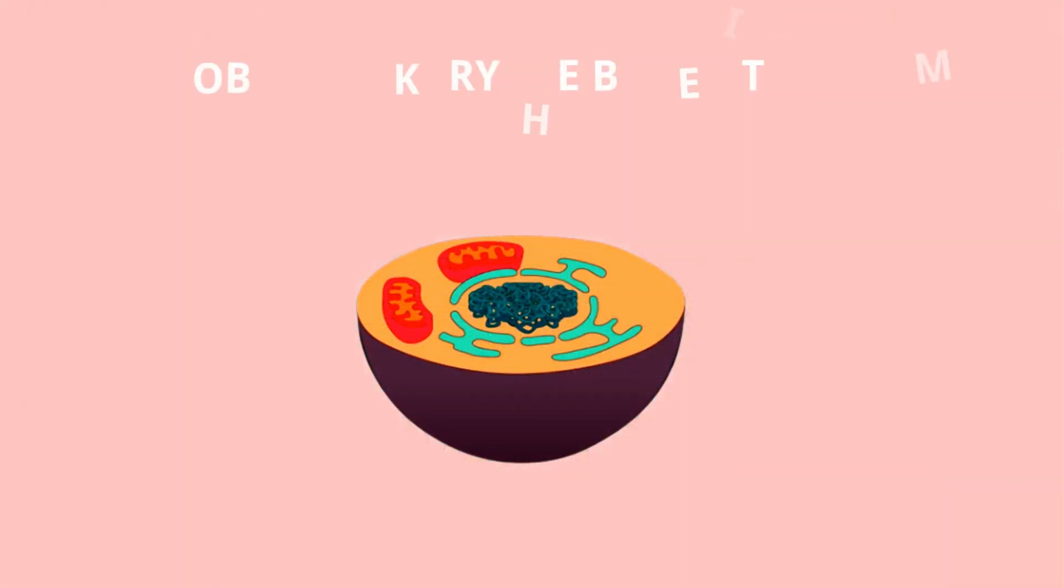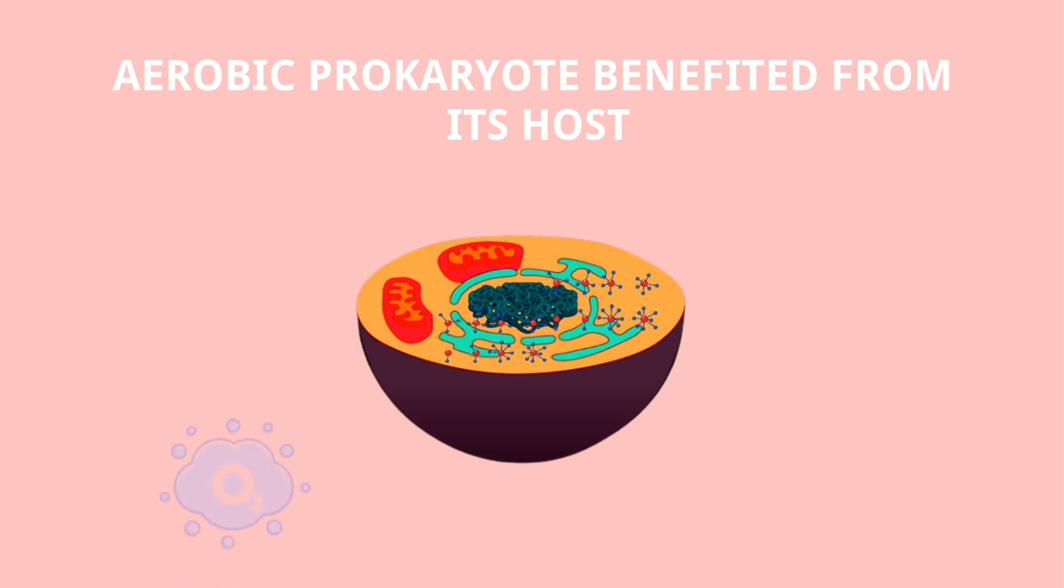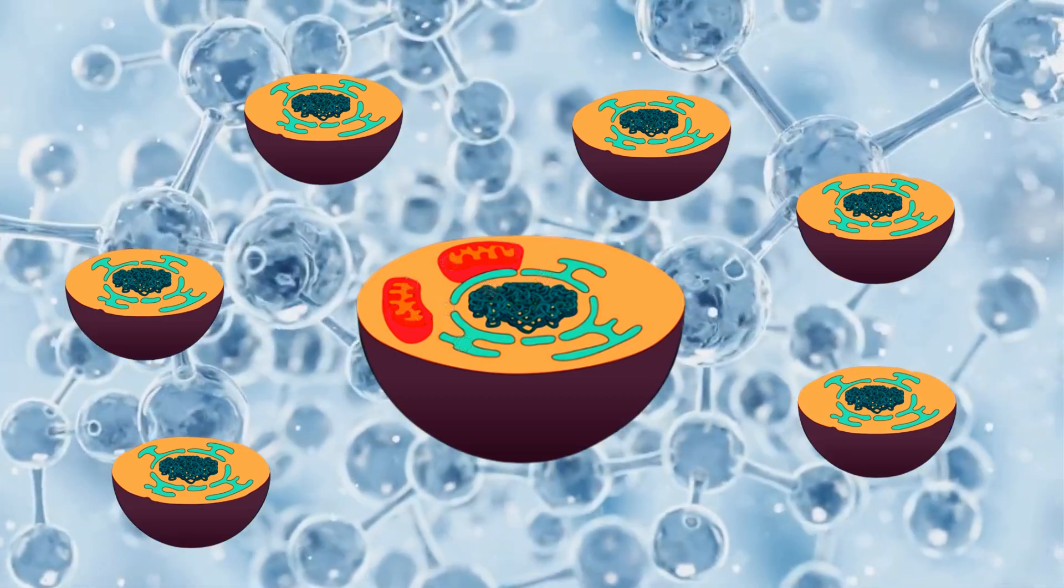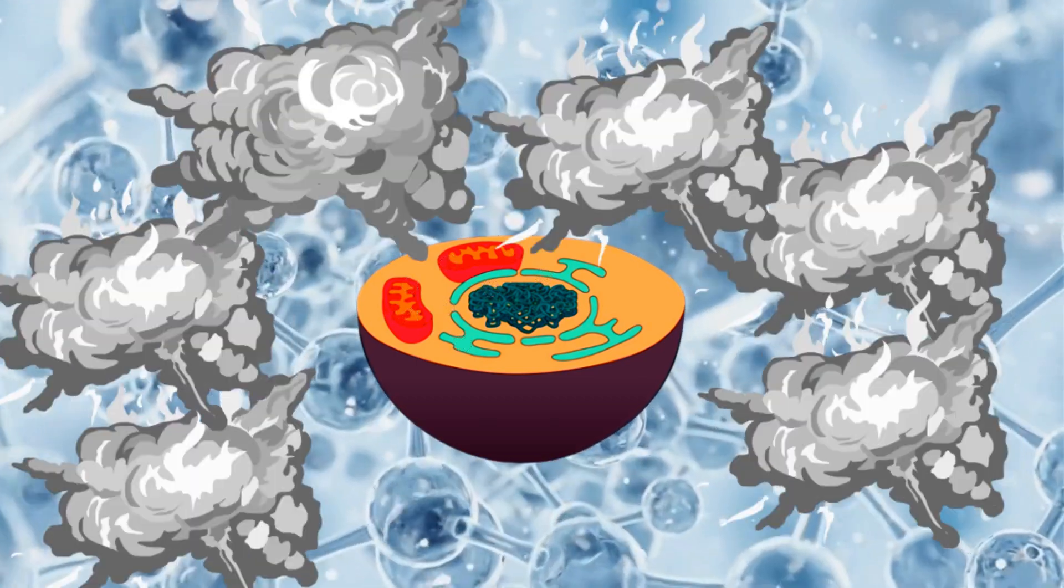The aerobic prokaryote benefited from its host because the cytoplasm was full of half-digested food molecules. Digesting these molecules with oxygen, the prokaryote produced so much energy that some of the ATP leaked into the cell's cytoplasm. So as other eukaryotes went extinct with the rising oxygen levels,